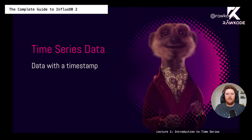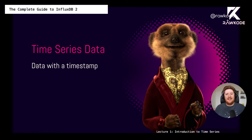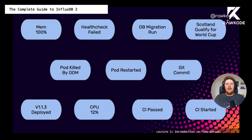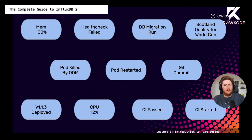What is time series data? I'm going to keep it simple: it is any piece of data with a timestamp. That is it. If you have a value and a timestamp, you can track the change of that value over time — that is time series data. What we have here are events — things that could happen in your infrastructure. We can see that memory is at 100%, a health check field, a database migration has been run, and a whole bunch of other things.